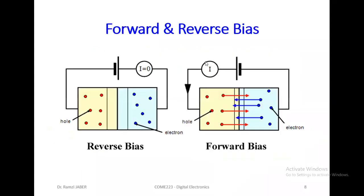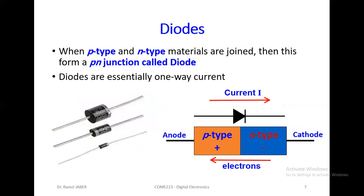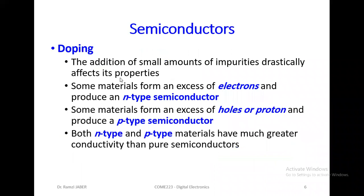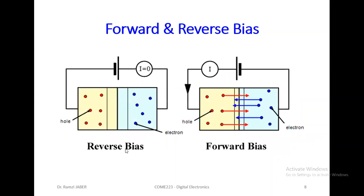In the diode there is something called forward bias or reverse bias. In the initial state, with no battery connected — no electricity applied — the N-type has excess electrons and the P-type has excess holes/protons. This initial condition without any power is related to what we call reverse bias: when we apply negative on the plus side and positive on the minus side, the polarity is reversed.